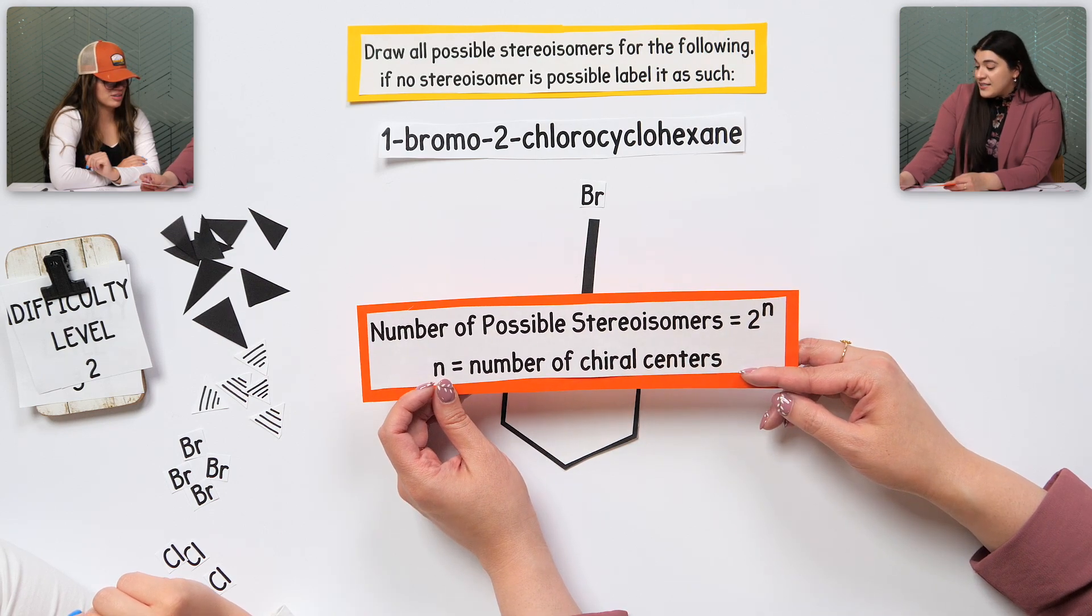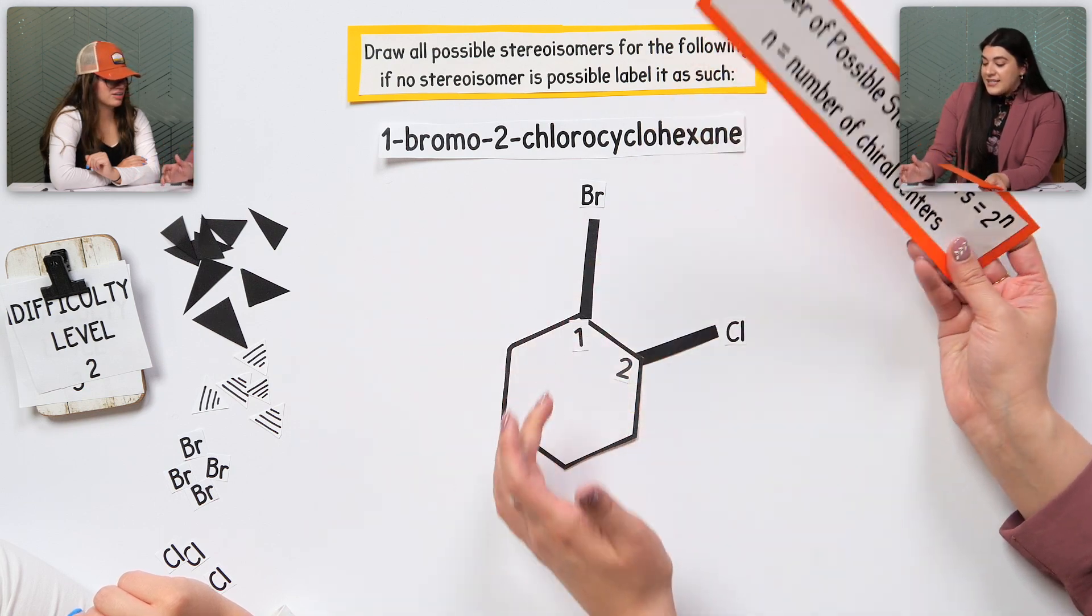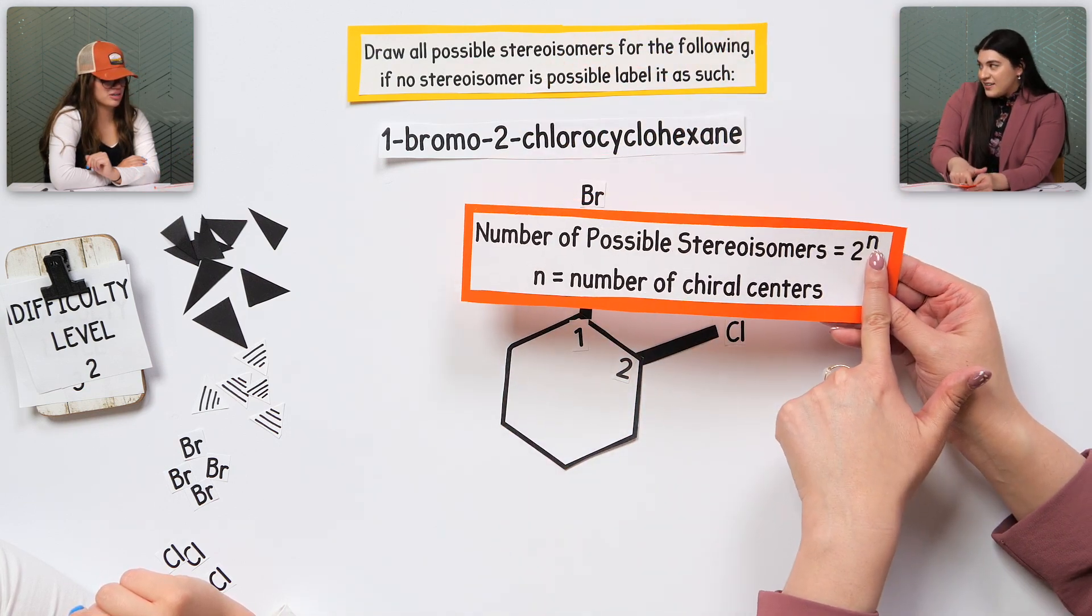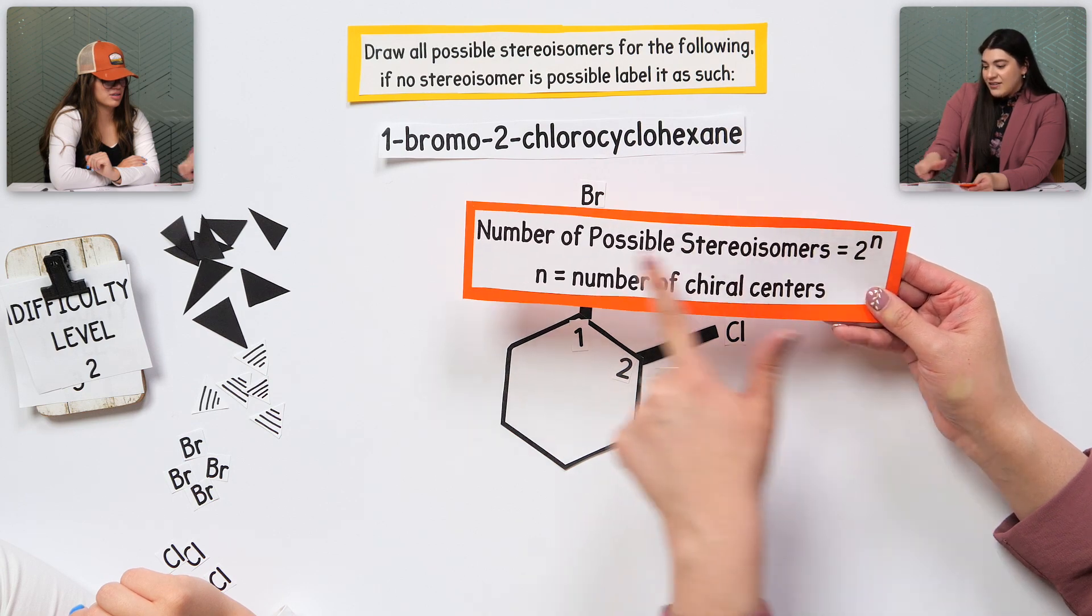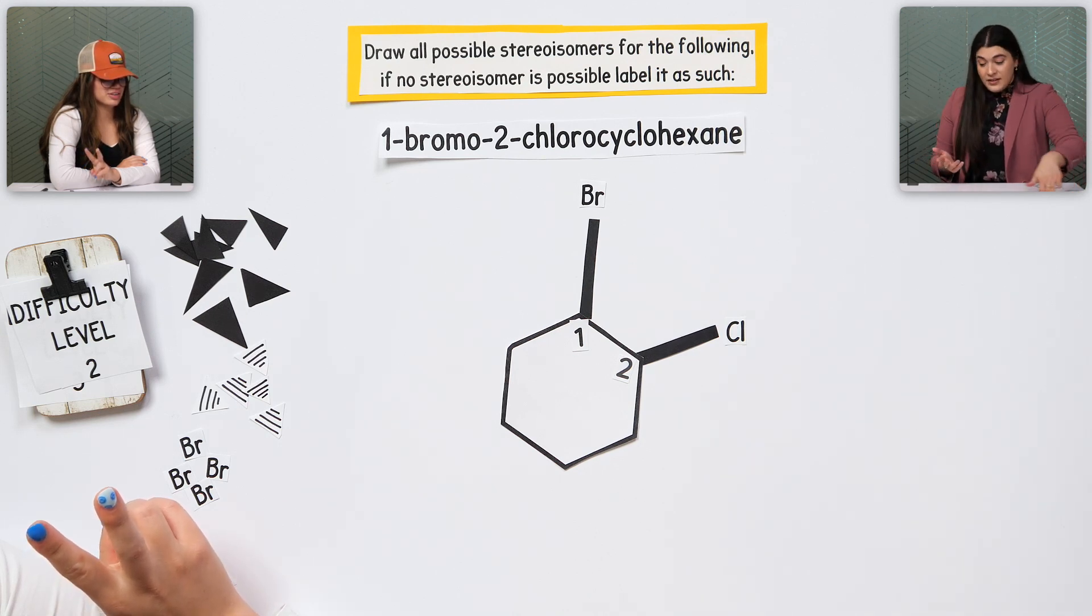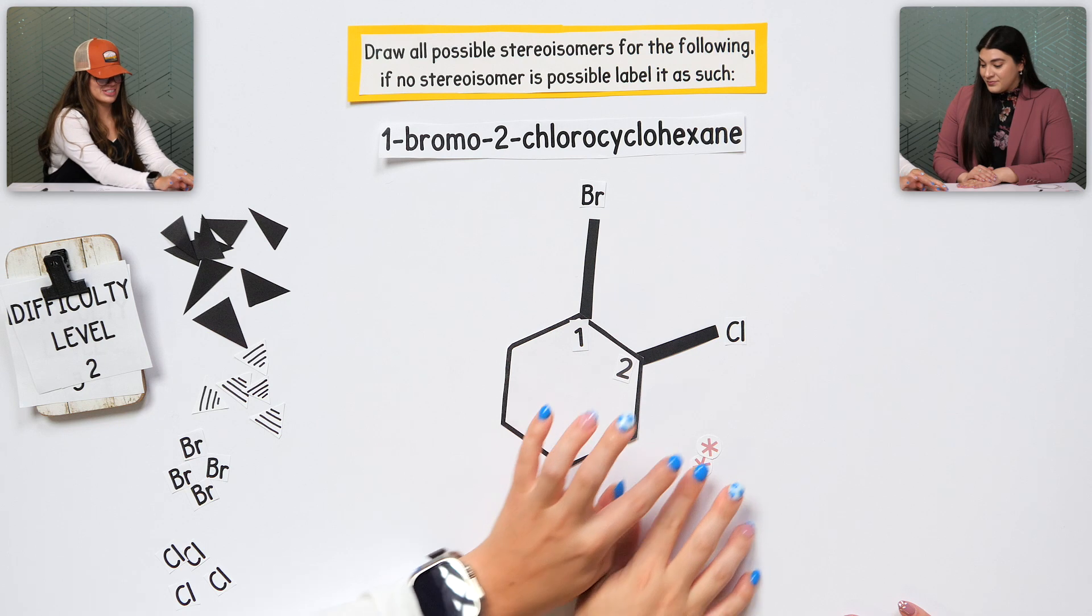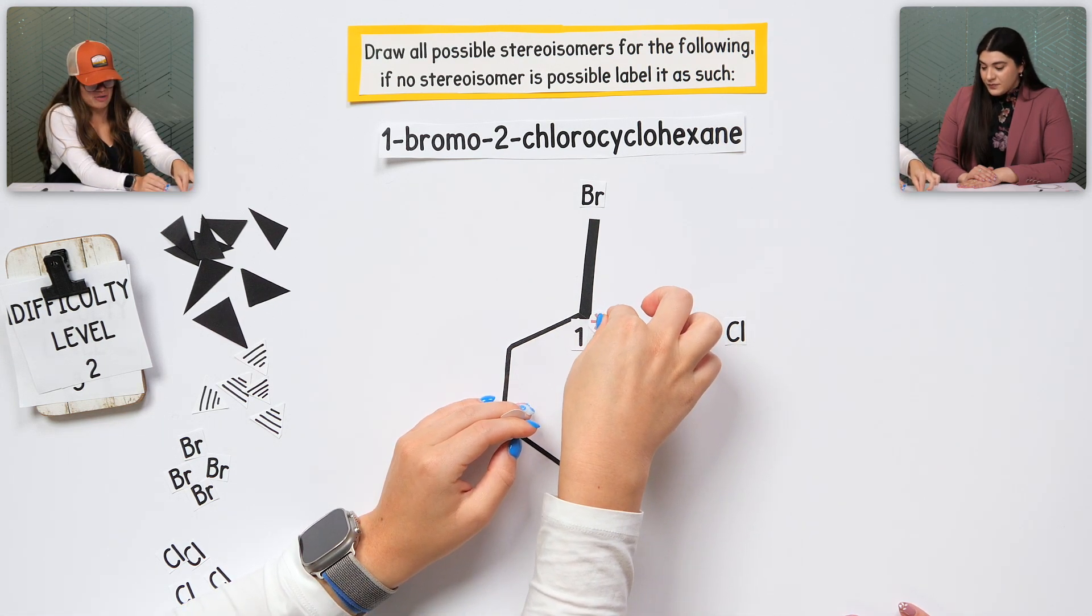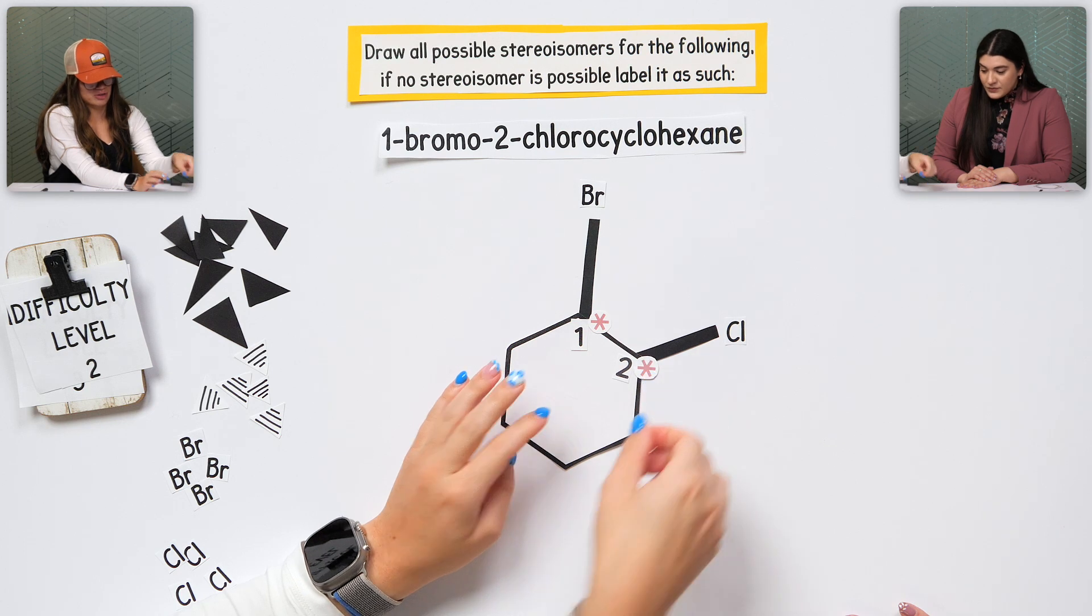So, the first thing we have to do is, after we build it, identify how many chiral centers we have. Plug it into the formula as n, and that's going to tell us the number of possibilities. So, how many chiral centers do we have? Is it just two? Good. Where are they? I would say it's right where I labeled them. It's like that corner right there, and then that carbon right there. Good.